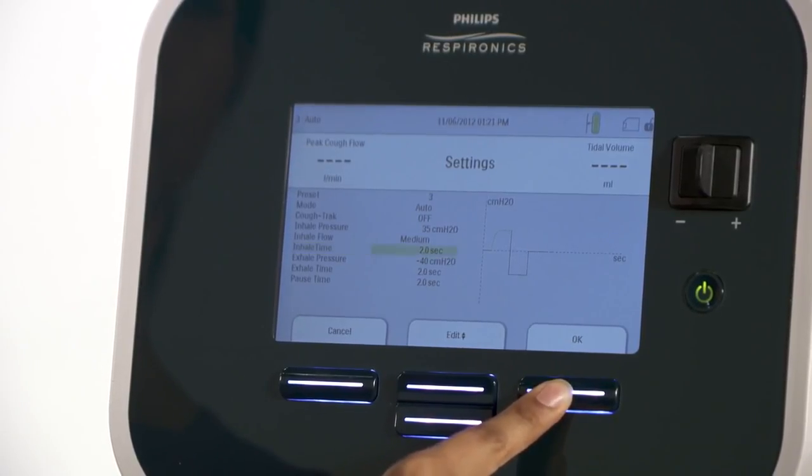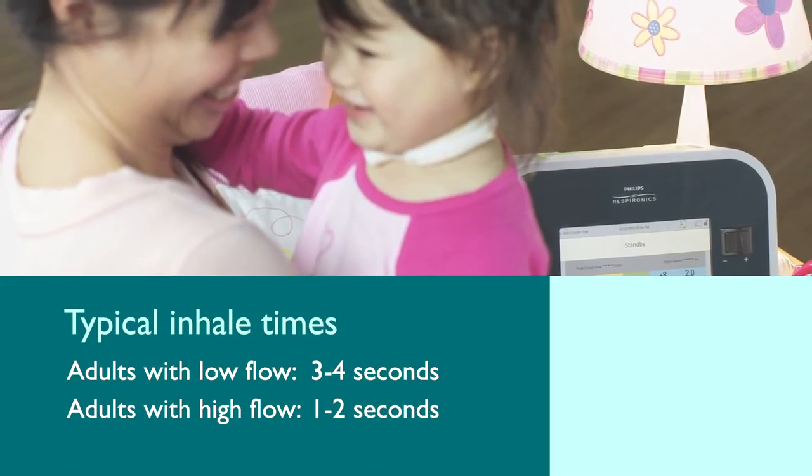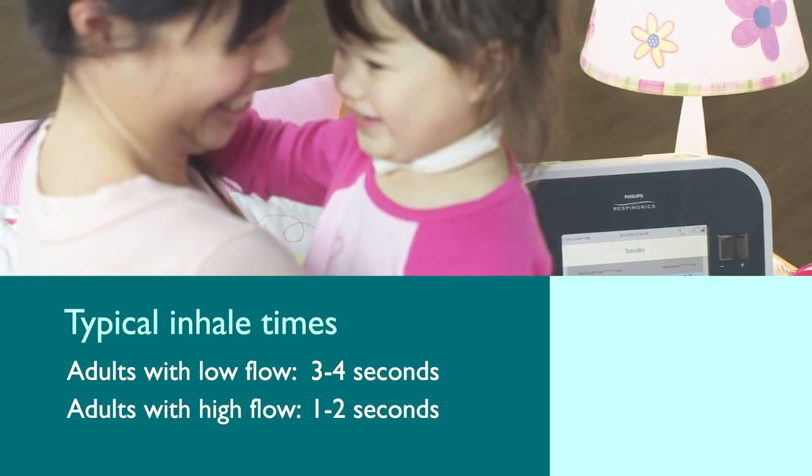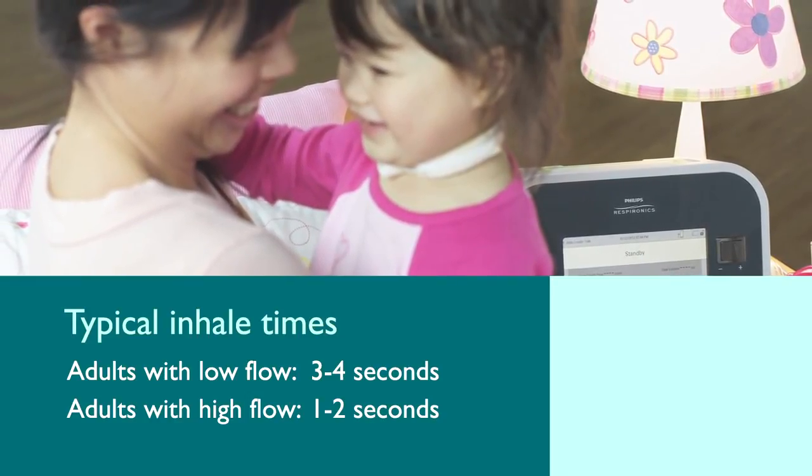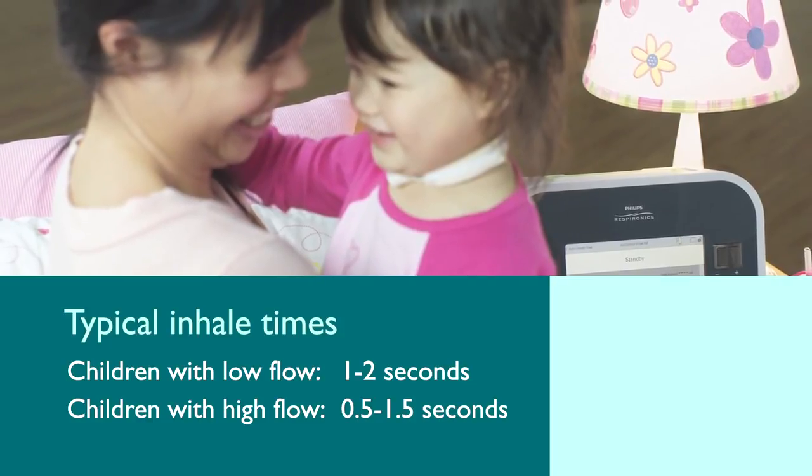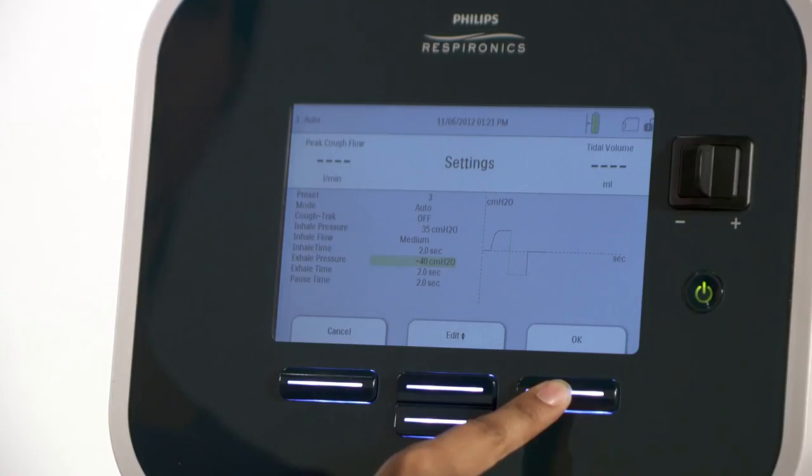Use the right button under modify to highlight inhale time. A typical inhale time for adults with a low flow setting is 3 to 4 seconds, 1 to 2 seconds in adults with higher settings. For small children with low flow, 1 to 2 seconds is typical, 0.5 to 1.5 for high flow. OK accepts the new inhale time.